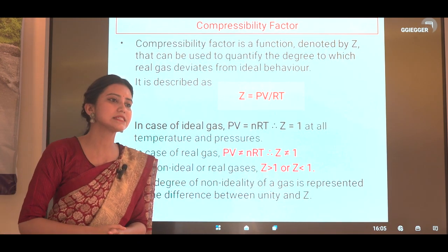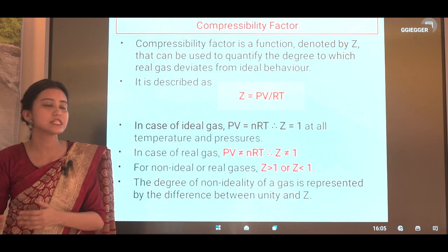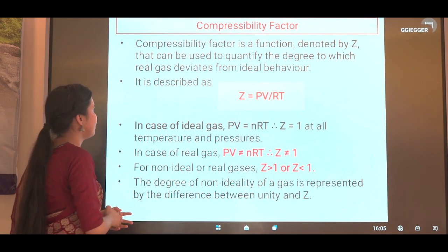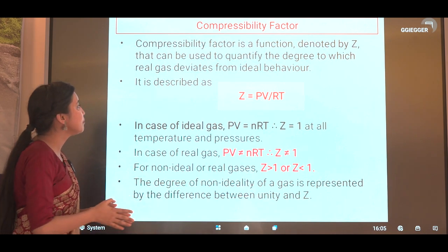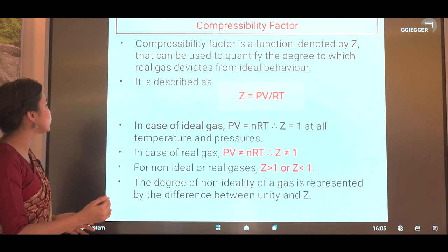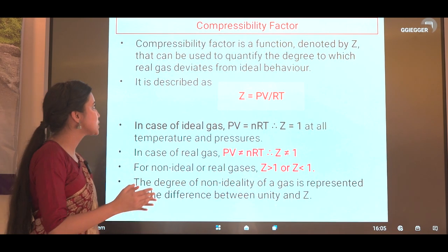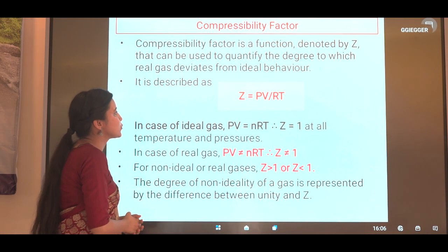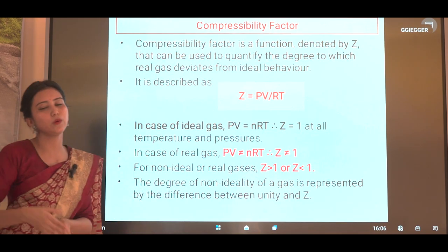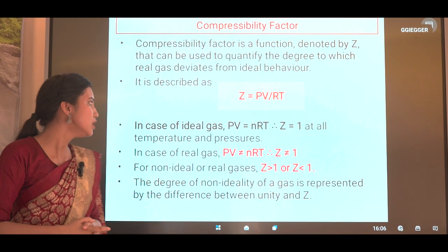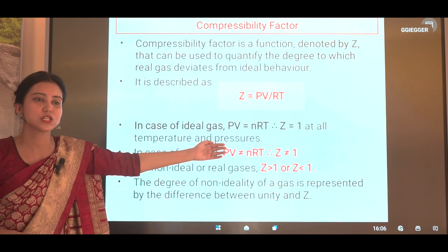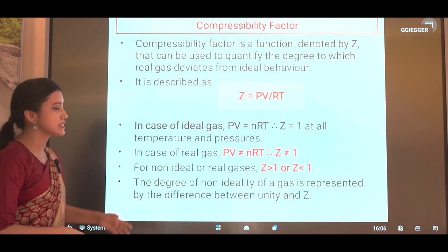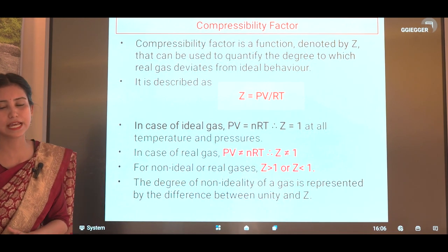The next topic is the compressibility factor. This is a very important term that defines the non-ideality of a real gas — the deviation of a real gas from ideal behavior. The compressibility factor is a function denoted by Z, used to quantify the degree to which a real gas deviates from ideal behavior. It is described as Z = PV/RT. In the case of an ideal gas, PV = nRT, so Z equals one at all ranges of temperature and pressure.